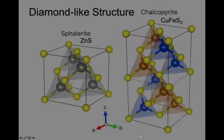On the right is chalcopyrite. In this case, the unit cell is doubled along the C axis, so it's a tetragonal mineral. Alternate metal sites are replaced by copper and iron.